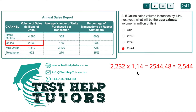Because remember, a 14% increase is the same as multiplying by 1.14. And that will give us 2544.48, which is roughly equal to 2544. So this option here is our answer.